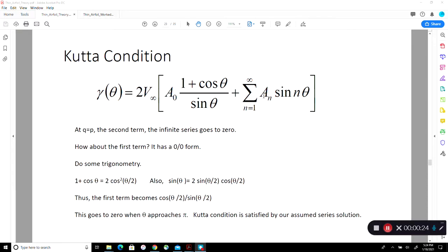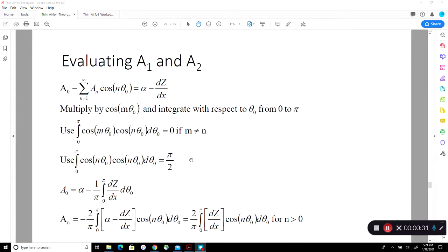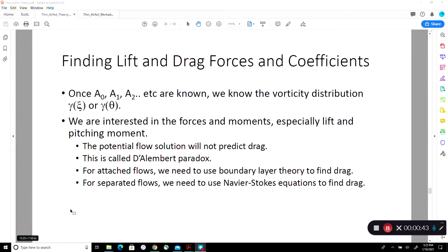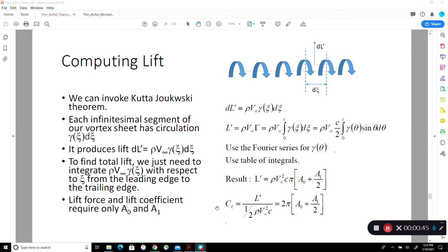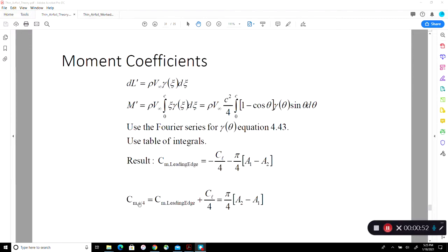The unknowns are A1, A2, A3, An, etc. This is the Fourier series, and we developed closed form expressions for A0 and An as shown in here. I call it closed form, but we still need to somehow evaluate this integral. Once you have A0, A1, A2, etc., in our previous lecture we showed that Cl can be expressed in terms of A0 and A1 only, and the pitching moment at the quarter chord can be written as pi over four times A2 minus A1.